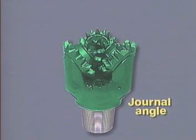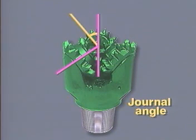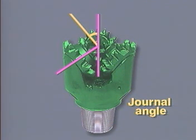The journal angle, by definition, is the angle formed by the intersection of a line perpendicular to the axis or center line of the journal, and the center line of the bit.